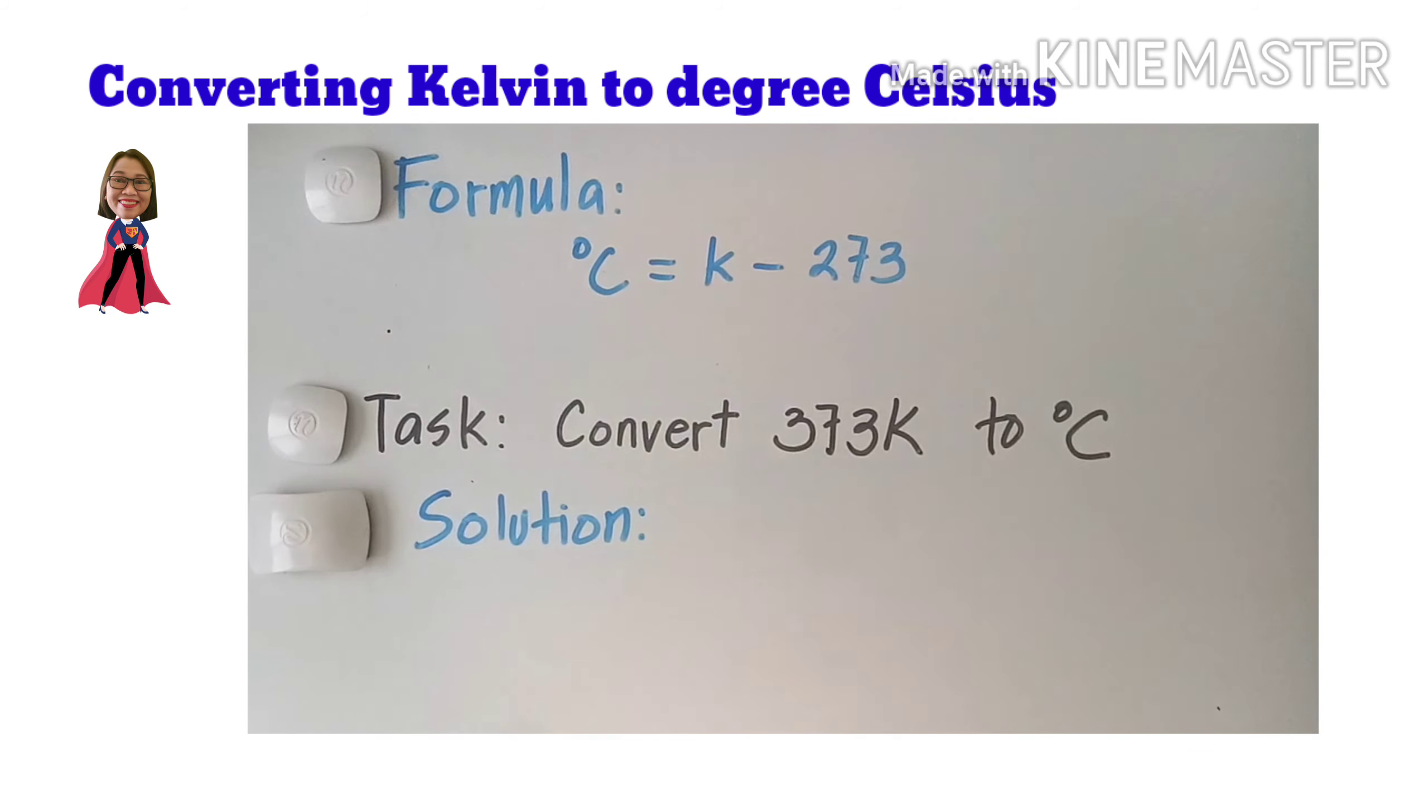Alright, so this time let us convert 373 Kelvin to degrees Celsius. Using this formula, degrees Celsius equals Kelvin minus 273.